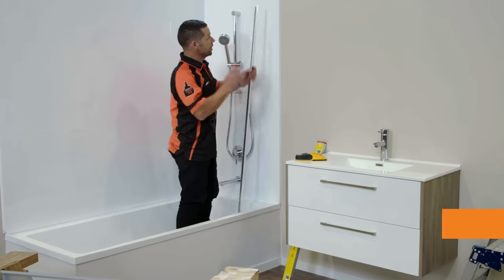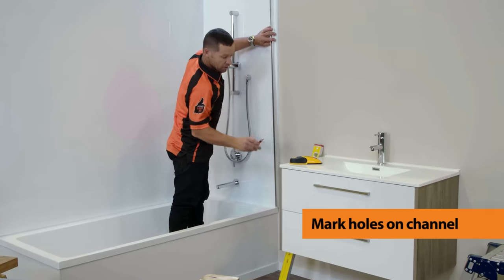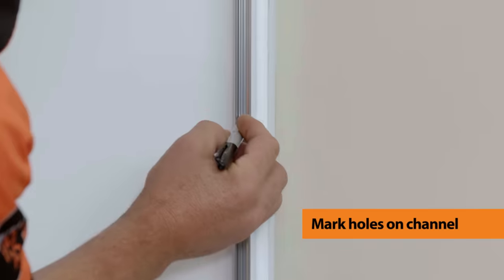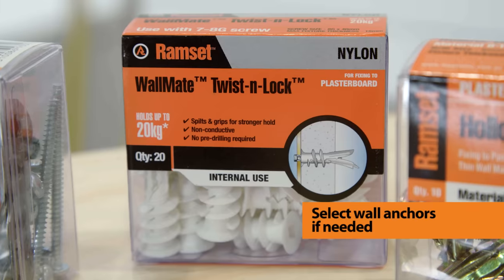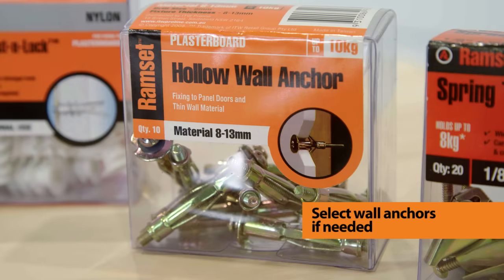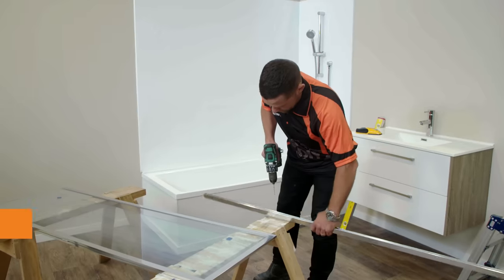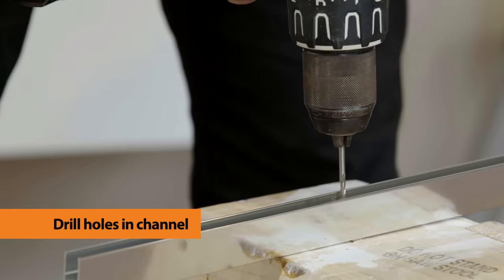I just need to transfer my marks onto our channel. Now I located three solid fixings in my wall. If you can't find any in your bathroom, there's a range of different types of wall anchors that you can use. Then drill holes in your aluminium channel to take your fixings.